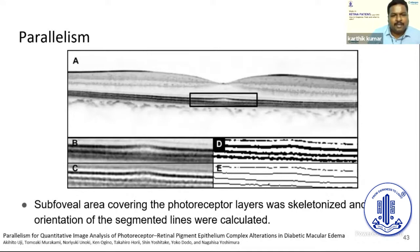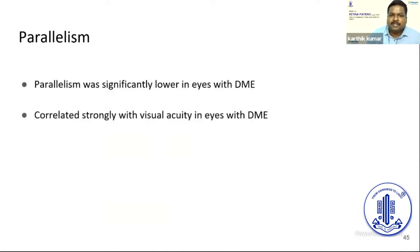Another parameter is parallelism, in which the outer retinal subfoveal area covering the photoreceptors is skeletonized and segmentation lines are assessed. When the segmentation lines are parallel to each other, vision is better. In DME, this parallelism is significantly disturbed, making it a useful additional parameter to consider.